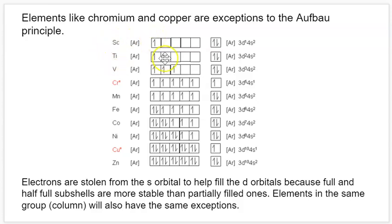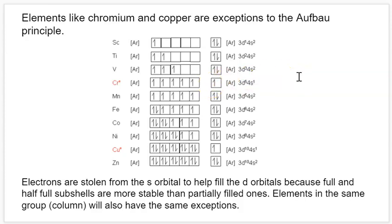As we go to titanium, we have 3d2, then vanadium, 3d3. Then as we get to chromium, all of a sudden we have 3d5 — we jumped from three to five in the d subshell — because we ended up borrowing one electron from the 4s subshell. We've experimentally found that half-full subshells and totally full subshells are more stable than partially full ones. So instead of having 4s2, 3d4, by removing one electron from s and putting it into d, we end up with 3d5 and 4s1 — both half-full subshells, achieving a more stable configuration.